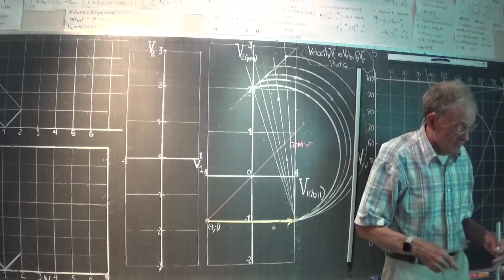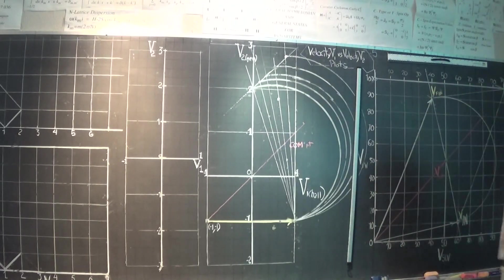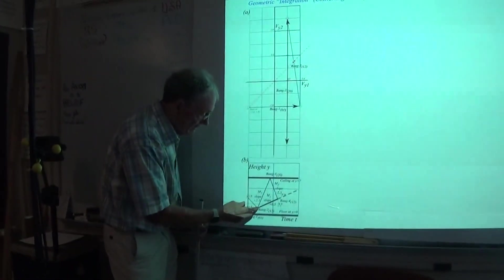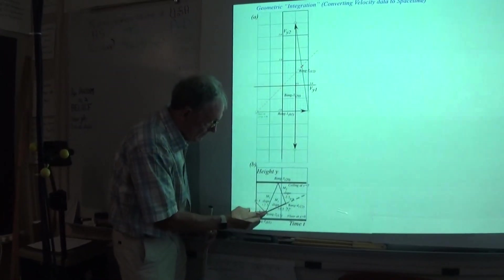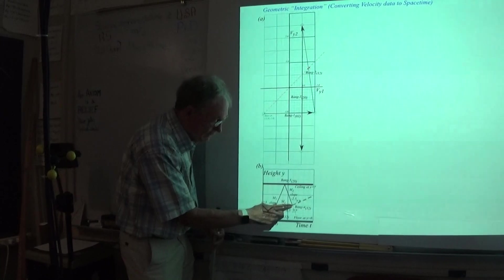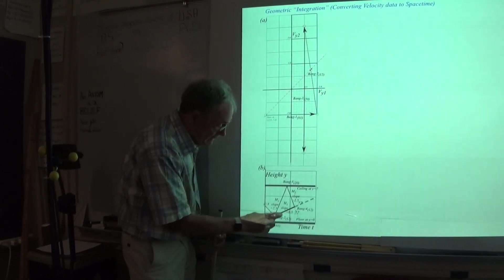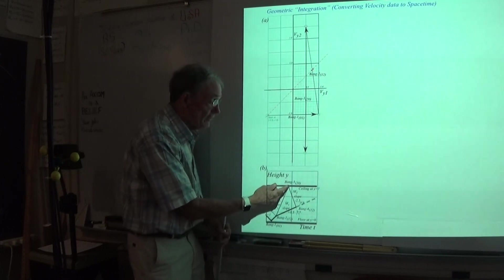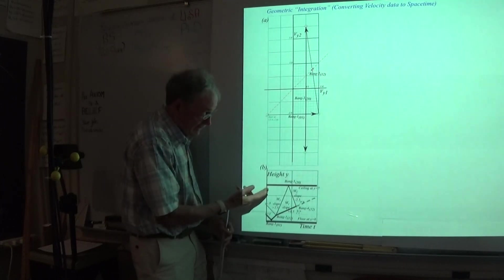Those are the final coordinates, and we just simply have to draw lines with those slopes from that point. First, this one with a slope of 0.5, and then this one with a slope of 2.5, which hits the ceiling, and then you have to know where the ceiling is.